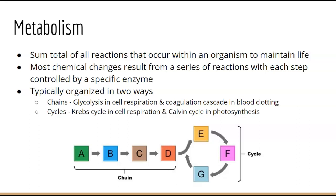There are two typical ways that we organize these series of reactions. You can do it as a chain — A, B, C, D — one after the other. Glycolysis is an example of this in cellular respiration, as is the coagulation of your blood when your blood clots. The formation of a scab — coagulation means sticking together — so when your blood stops free-flowing out of a cut, that is due to the coagulation cascade.